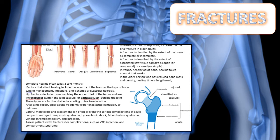Factors that affect healing include the trauma, the type of management, infection, and ischemic or avascular necrosis. Hip fractures are quite common and they are going to be classified differently. Intracapsular — within the joint capsule — is going to be around the area of the break. Extracapsular is going to be outside the joint capsule, meaning anything breaking in that region.